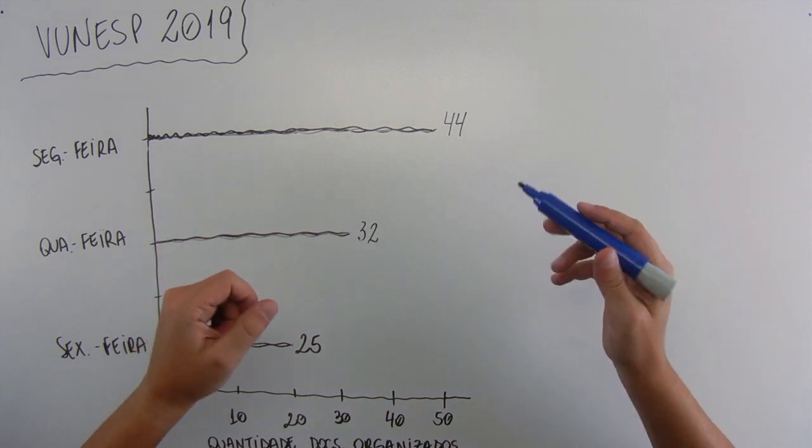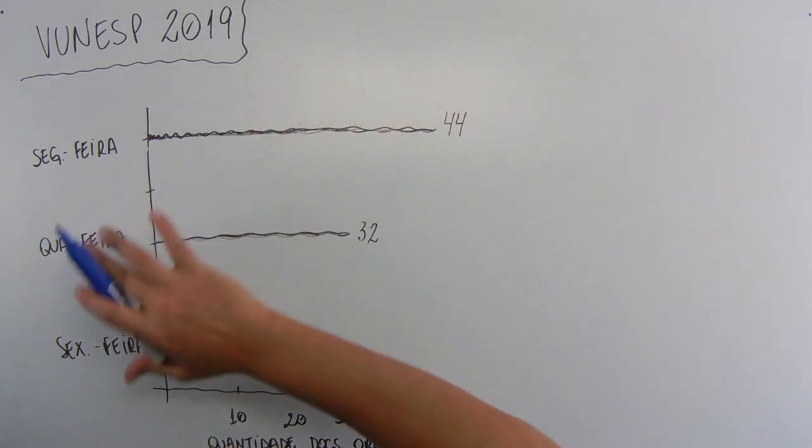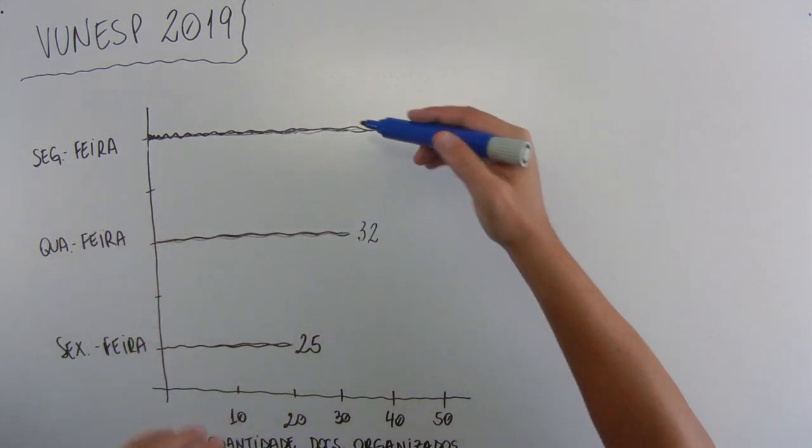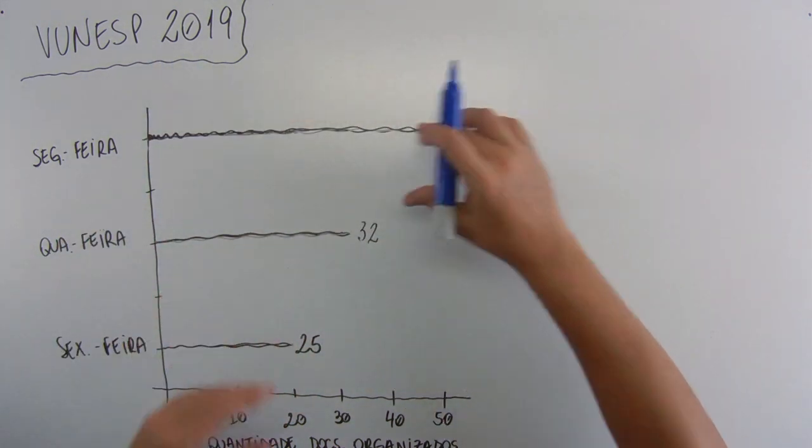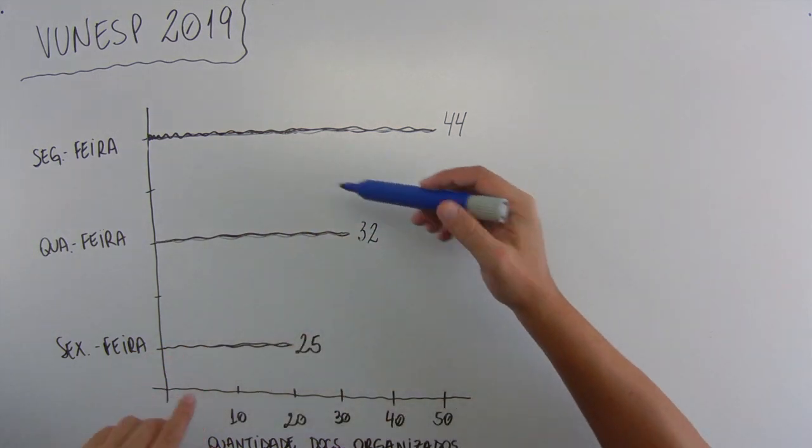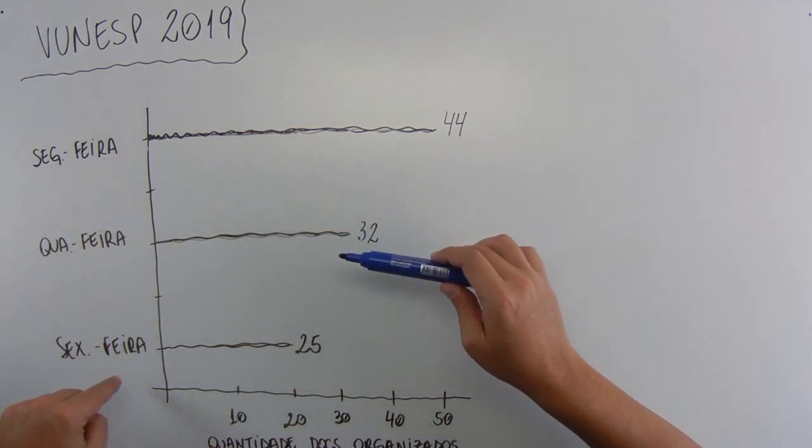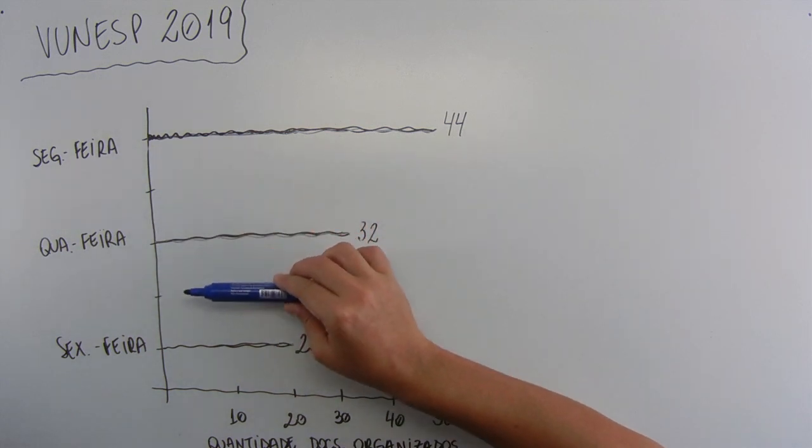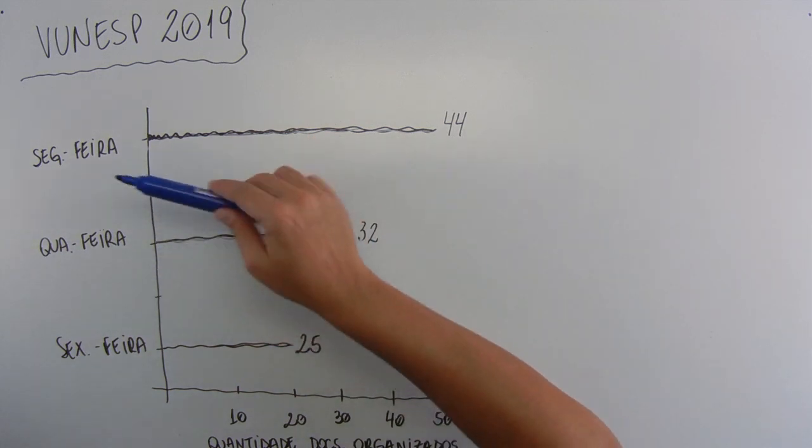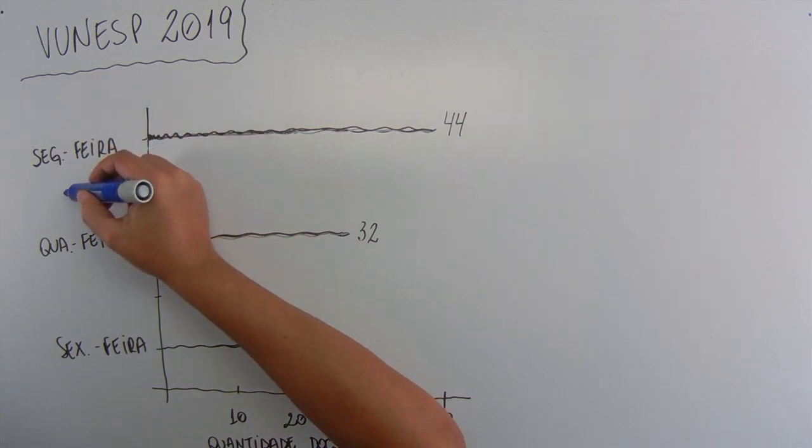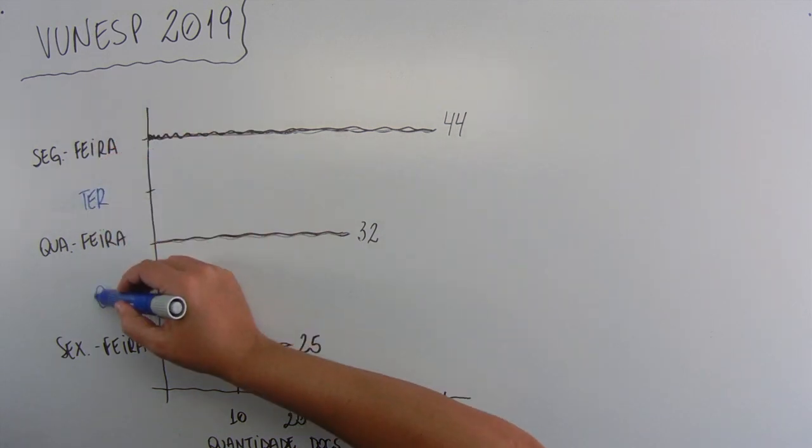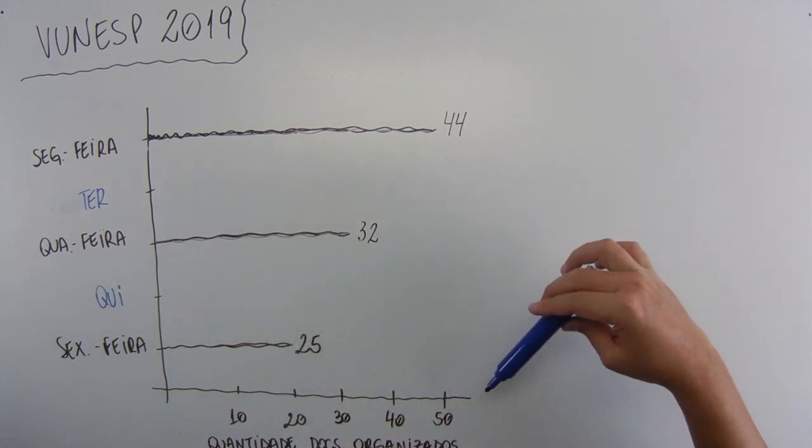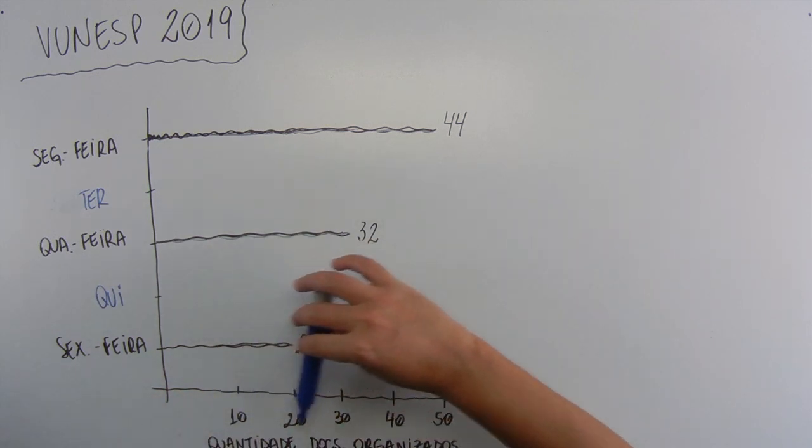And then, did you get to solve this question? First of all, let's analyze the graph. In fact, this graph is a little different from what's in the test, because these are bars. And to not design the bars, I made some lines. So, here are the days of the week: 2nd, 4th and 6th. This here, 5th and 3rd. It's implied because there are these two traces. So, we can complete it: 3rd and 5th. And here are the quantities of documents organized. It's a little faded, but you can read it. The quantities of documents organized.